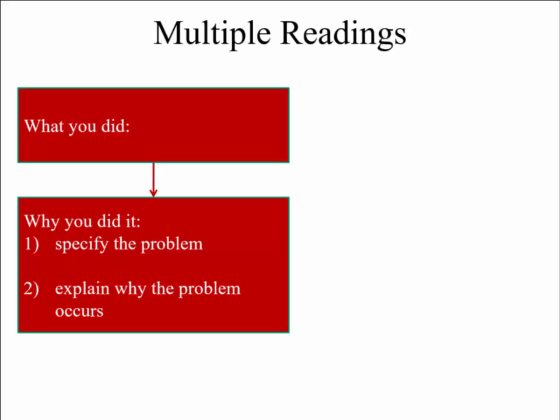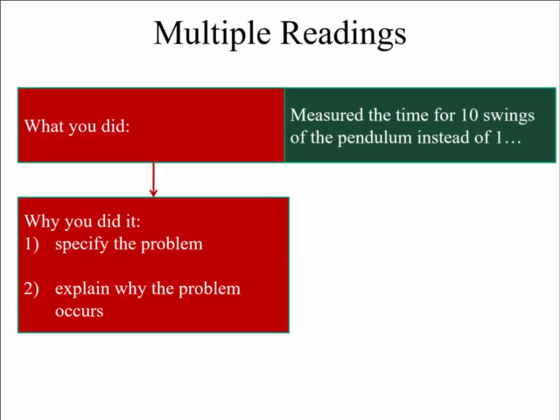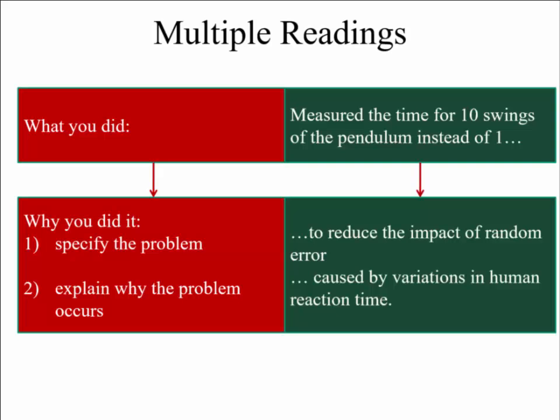One other thing you can do if you've got something that you can measure over and over again, or you've got lots of something to measure, for example, timing something that's cyclic. So you could measure the time for 10 swings of the pendulum instead of one, and that, why you did it, was to reduce the impact of random error caused by variations in the human reaction time. You could also add in there that perhaps it is difficult to measure one swing, because it's very short. There's no reason why this needs to be all you write, but it's good to demonstrate that you understand why you're using a particular technique in your measurements.